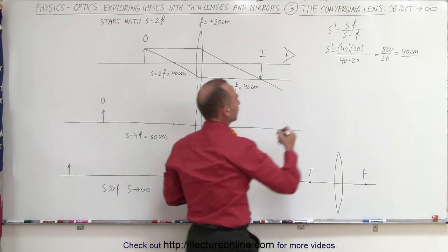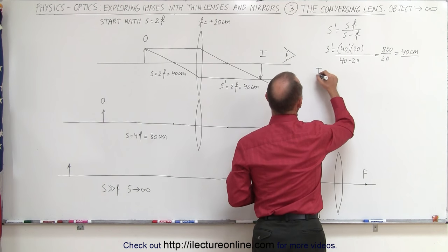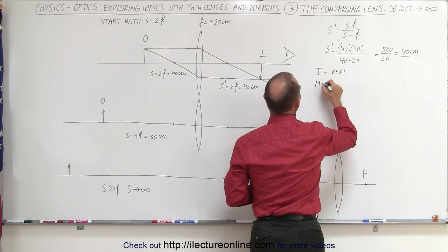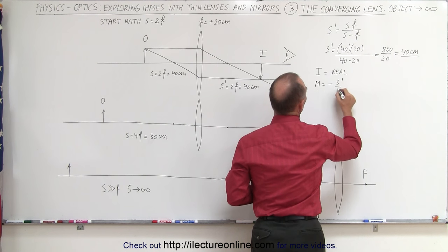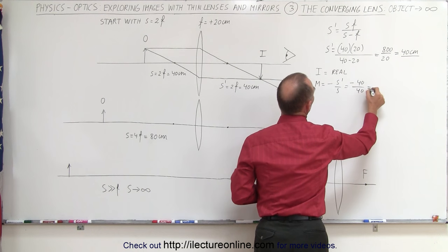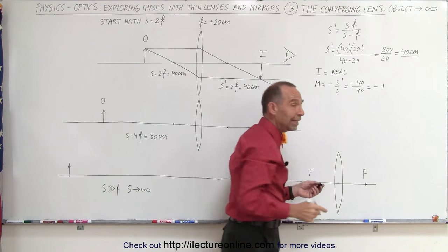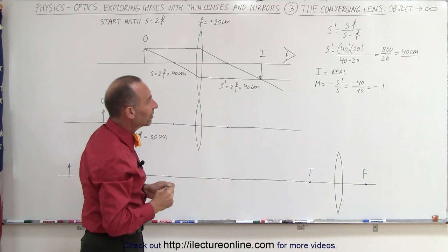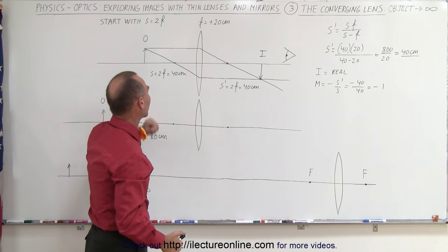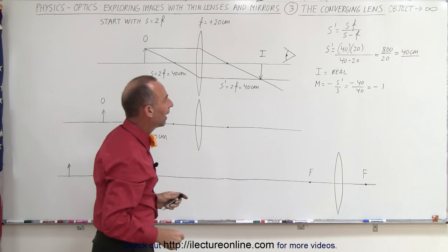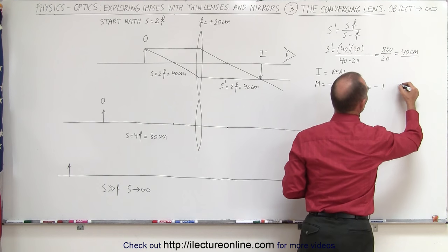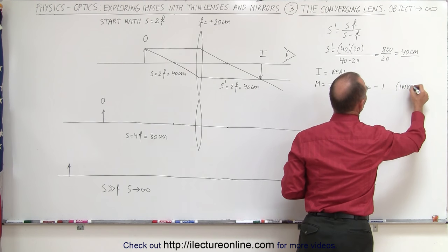That's the interesting part about this particular point: if you place the object at exactly twice the focal length away from the lens, then the image will appear exactly twice the focal length away from the lens on the other side. The image is real. The magnification is minus S' over S — minus 40 divided by 40 — which is minus 1. The 1 indicates the image is exactly the same size as the object, and the negative sign means it's inverted.